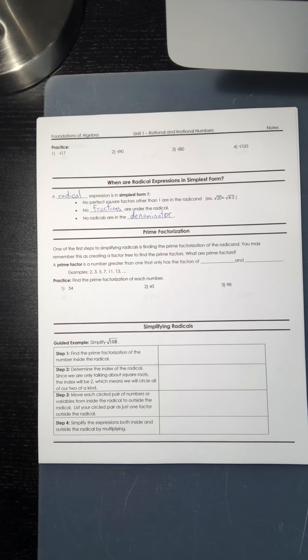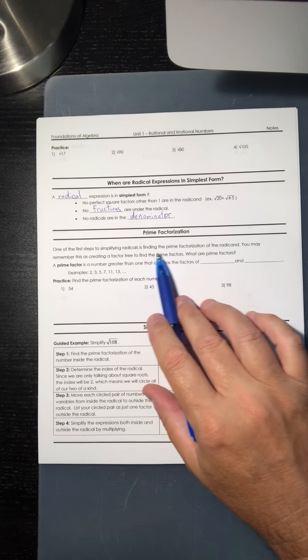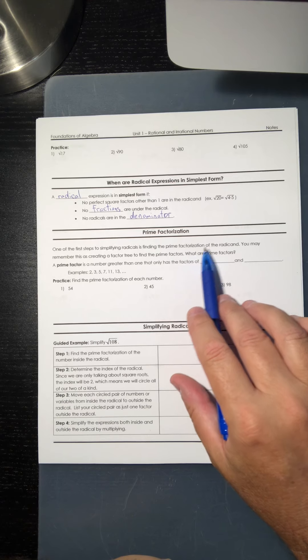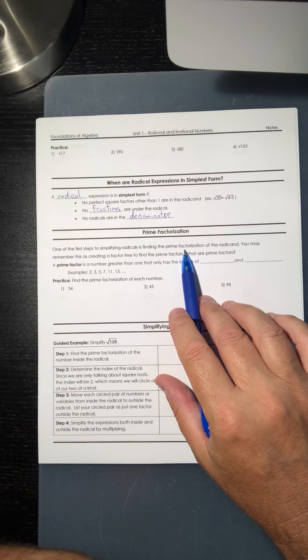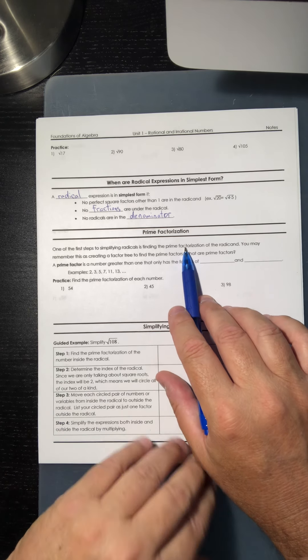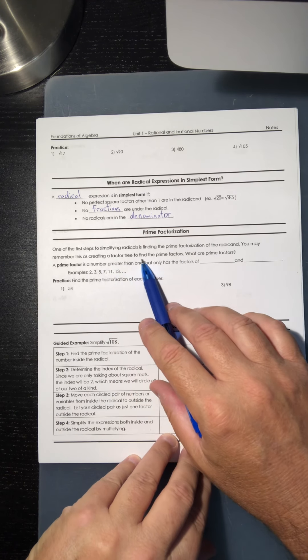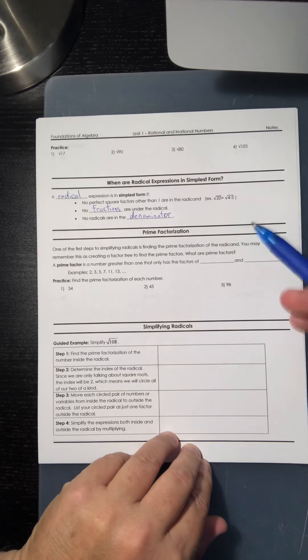All right, one of the first steps simplifying radicals is finding the prime factorization. You might not know what that is by the term, but I think once you see it you're gonna say, oh yeah, I kind of remember that. You may remember this is creating a factor tree to find the prime factors.